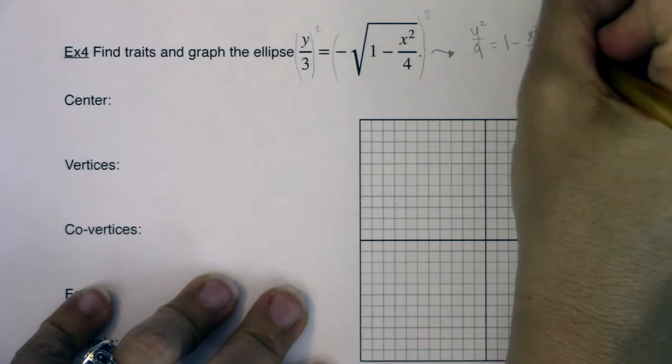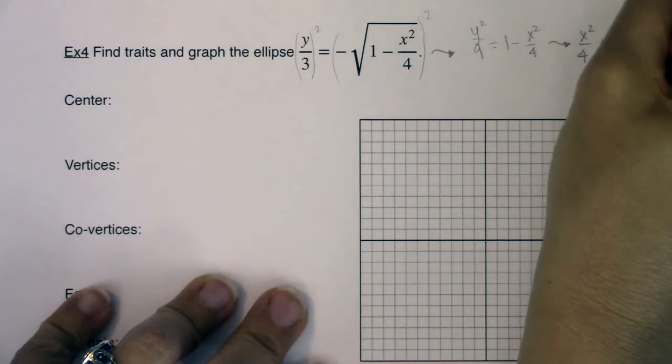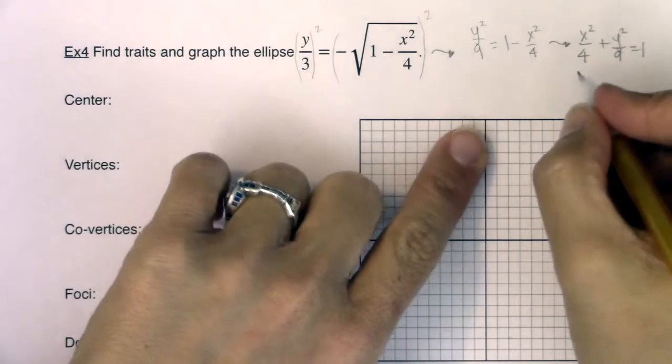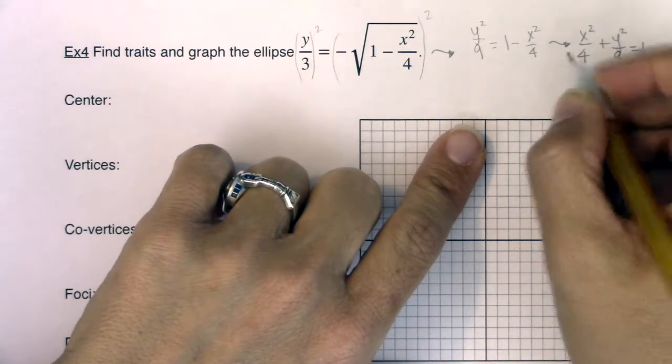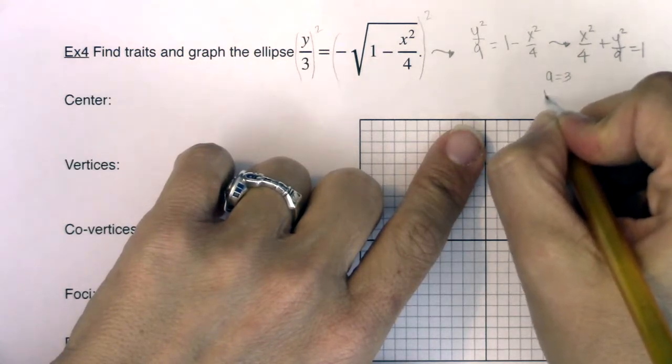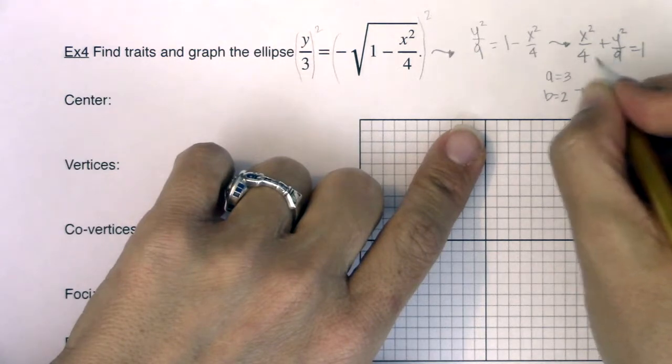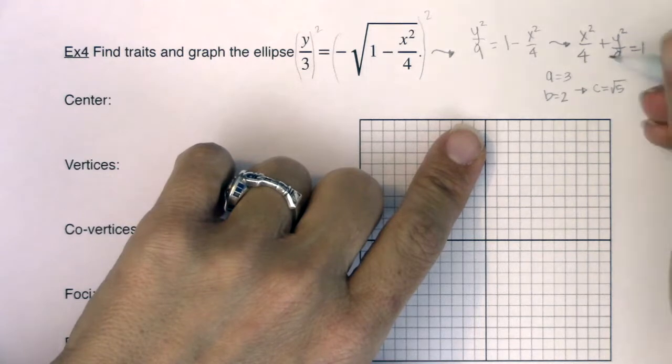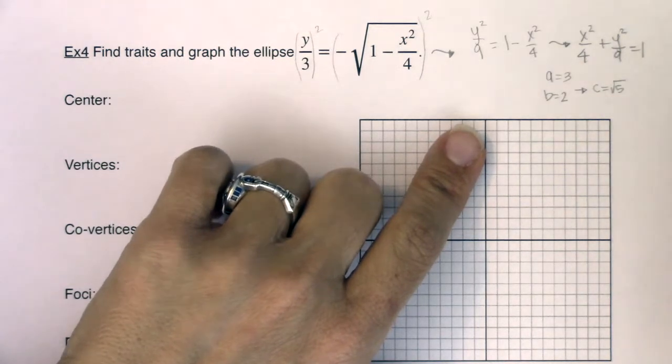Now if I move the x squared over, I'm looking at x squared over 4 plus y squared over 9 is equal to 1. So all of a sudden I do see my ellipse in standard form. I see a squared here at 9, b squared is 4, so I can see here a is 3, b is 2. And if c squared is equal to a squared minus b squared, c will be equal to the square root of 5, because 9 minus 4 is 5, and c squared would be equal to 5, so c is the square root of 5.